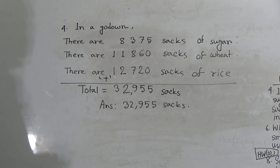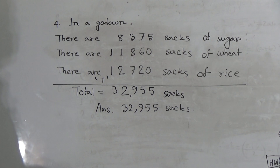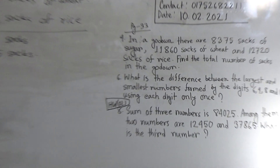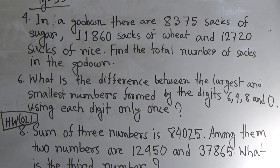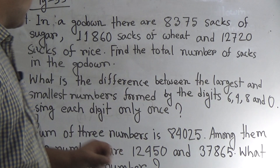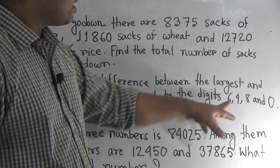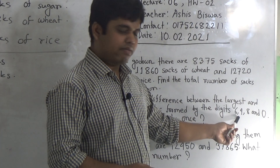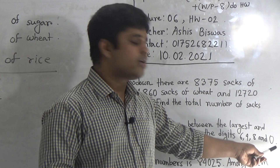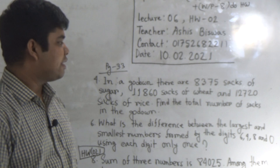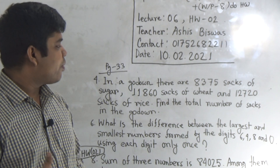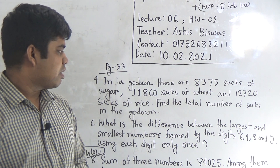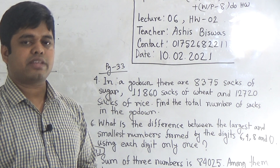I hope you have understood. This is the solution of question number 4. I hope you have no problem in this section. Next, we shall solve problem number 6. In order to solve question number 6, first we read the question: 'What is the difference between the largest and smallest number formed by the digits 6, 4, 8, 0, using each digit only once?' Here you notice 4 digits are given: 6, 4, 8, and 0.